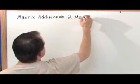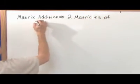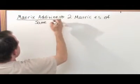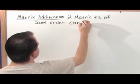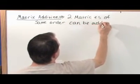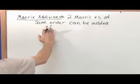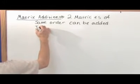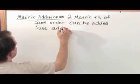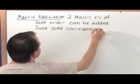For matrix addition, here is what you need to know: two matrices of the same order can be added. The order is just the number of rows and number of columns, so they have to have the same order — the same number of rows and columns — in order to add them. All you do is just add corresponding entries.